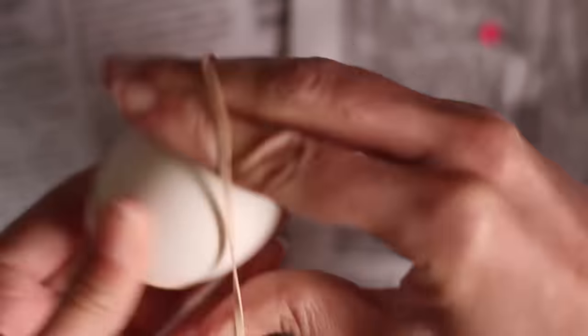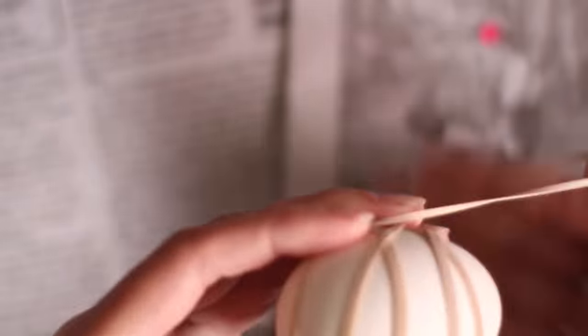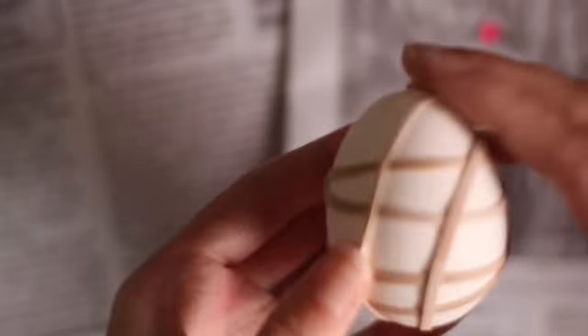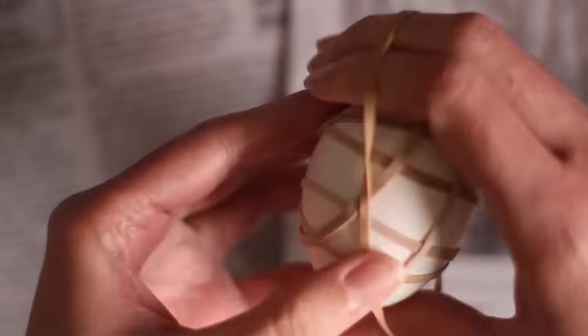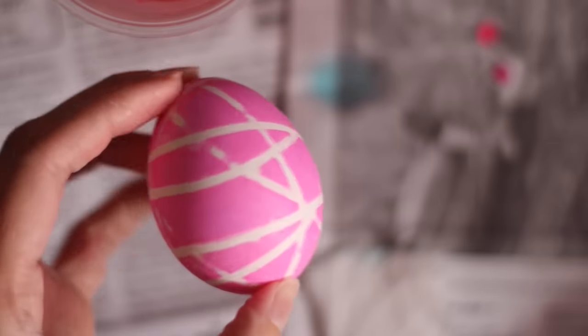For idea seven, we're using rubber bands. So just take a couple rubber bands and you can use different widths of them to get different looks. And just wrap them around the egg as many times as you'd like. So it looked like this. And then I just took the egg and put it into some pink dye. Left it there for a little while. And then took the rubber bands off. And it ended up looking like this.